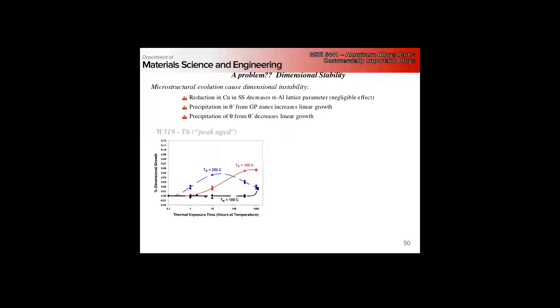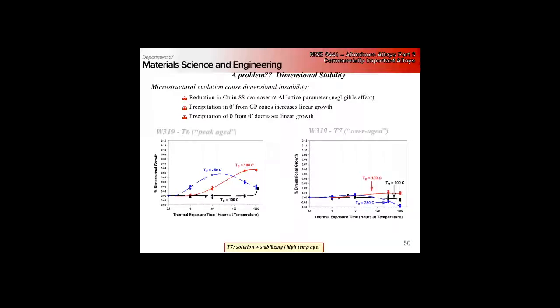Anytime you have something bolted in place and then it grows or shrinks from either thermal or microstructure changes, that imparts potentially huge loads on itself and on the neighboring things that it's bolted to. So what's going on with these alloys? I've got two cases here, peak-aged and over-aged. It's basically two different tempers. Remember the T7 temper is stabilized, meaning it's given a short high temperature heat treatment to exhaust strengthening.